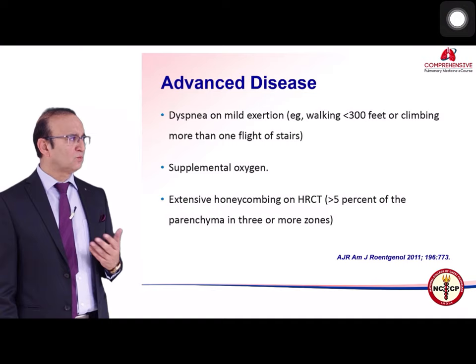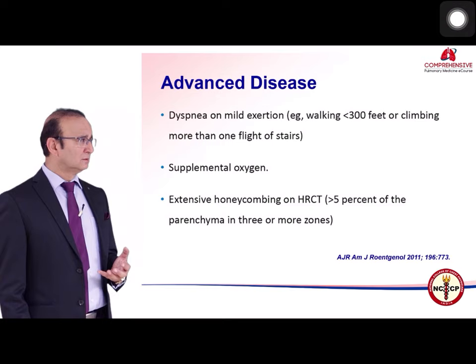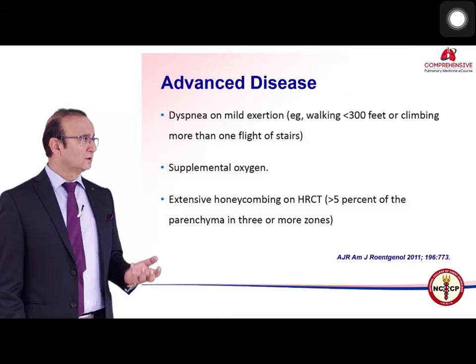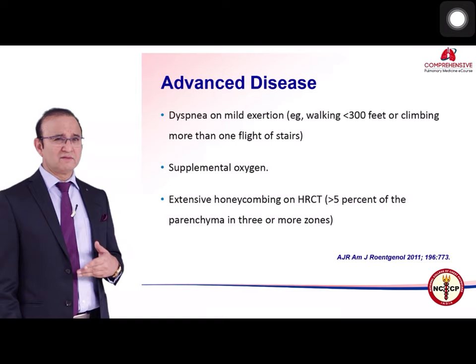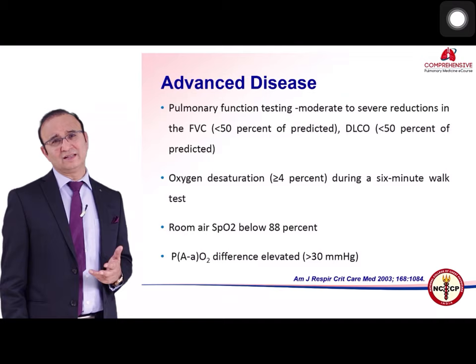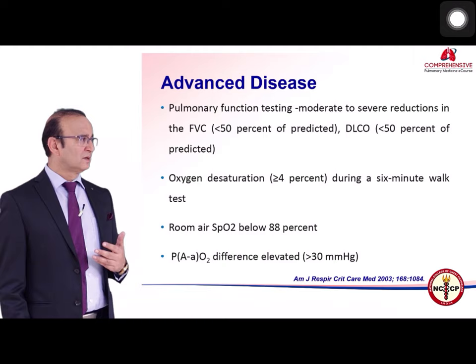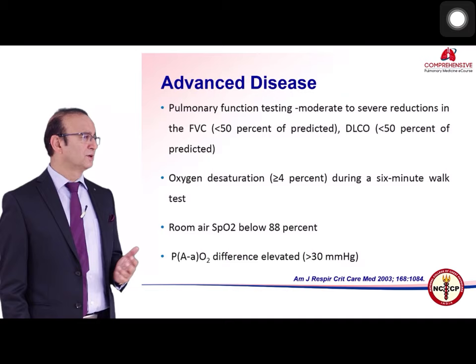In advanced disease, patients may be dyspneic even at rest or with mild exertion, and cannot walk even 300 feet. They require supplemental oxygen at rest or on mild exertion. There is extensive honeycombing on HRCT of more than 5 percent. PFT reveals FVC less than 50 percent and DLCO less than 45 percent of predicted. Oxygen saturation drops more than 4 percent during a six-minute walk test.